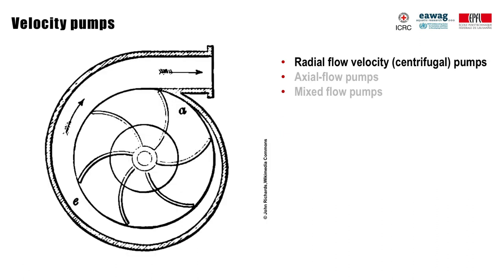While positive displacement pumps operate by manipulating the available space inside the pump, velocity pumps operate by manipulating the velocity of fluid during its movement through the pump. A radial flow pump, also known as a centrifugal pump, first converts energy of a motor into kinetic energy by a rotating impeller. When the impeller rotates, it spins the water sitting in the cavities between the vanes outward and provides centrifugal acceleration. As water leaves, a low pressure area is created, leading to suction of more water. The kinetic energy of water coming out of the impeller is afterwards harnessed by creating resistance to the flow. Water meets with a stationary diffuser or volute, which slows it down and converts the kinetic energy into pressure energy.